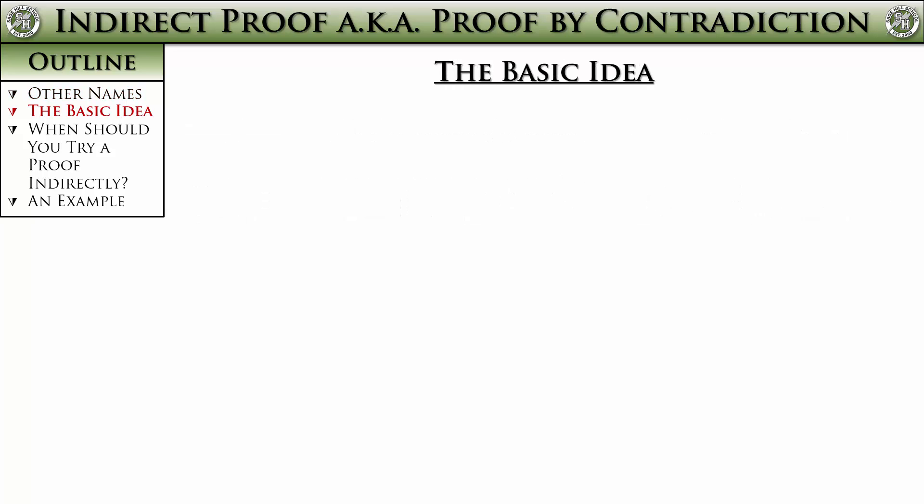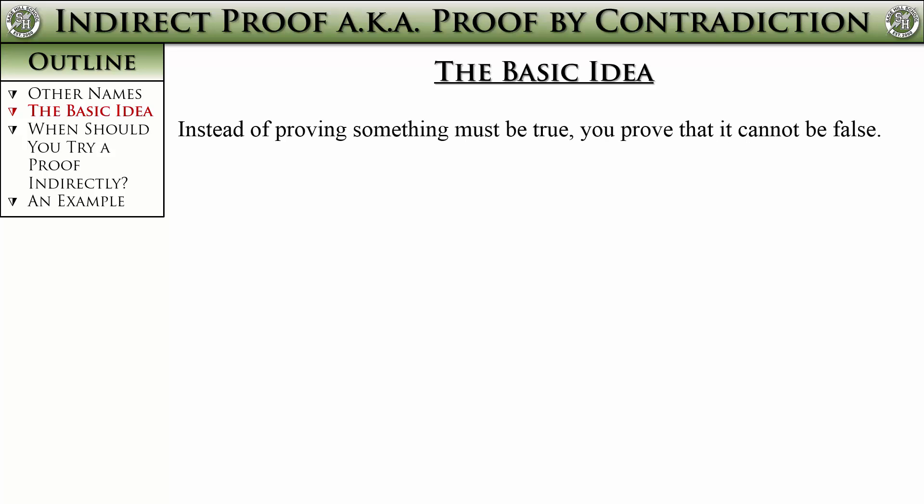Doing regular proofs works best for most instances, but there will be times where it is easier to go in the back door and approach it another way, which is where indirect proof comes in. Instead of proving something must be true, you prove that it cannot be false. Some of the most difficult proofs in mathematics were finally solved because mathematicians found an easier time going the indirect route.